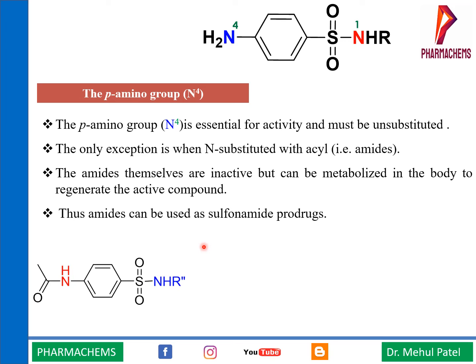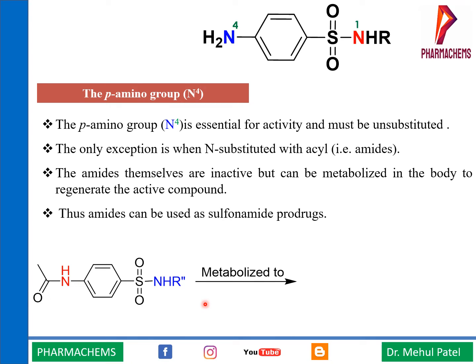How does this prodrug work? For example, when there is an NHCO linkage formed by substitution of the amino group, enzymatic hydrolysis in the body converts it back into the active sulfonamide. Examples of drugs following this mechanism include sulfasalazine, phthalyl sulfathiazole, and succinyl sulfathiazole. These are all poorly absorbed molecules that enter the intestine where they convert into the active form. So the para-amino or primary amino group is essential in this structure.